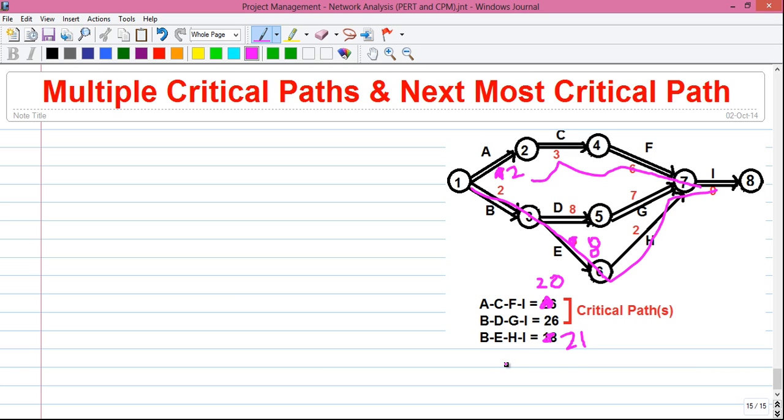So in that case, there will be only one critical path. That is, with the maximum value among 20, 26 and 21, it's 26. So our critical path will be B, D, G and I.